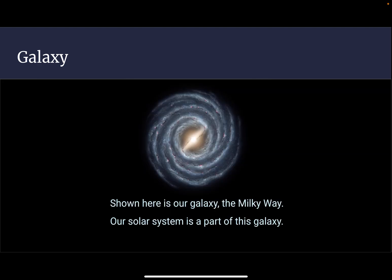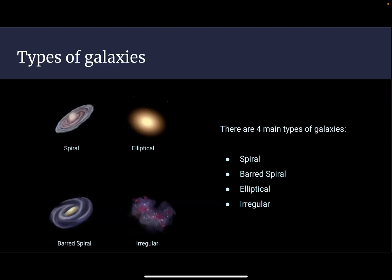This is our galaxy, the Milky Way. Our solar system is a part of this galaxy. There are 4 main types of galaxies: a spiral galaxy, a barred spiral galaxy, an elliptical galaxy, and an irregular galaxy.